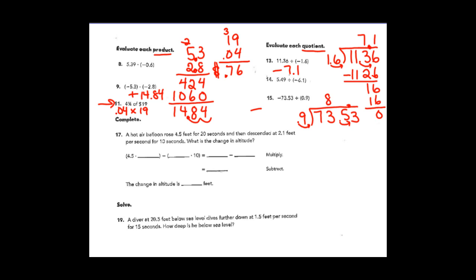Nine goes into seventy-three eight times — very close to seventy-three. When I subtract, I get one. Bring down my next number: I have fifteen. Nine goes into fifteen one time. Subtracting, I get six. Bring down: sixty-three. Nine goes into sixty-three seven times. Seven times nine is sixty-three. When you subtract, you get zero as your remainder. So the answer is negative eighty-one and seven tenths.